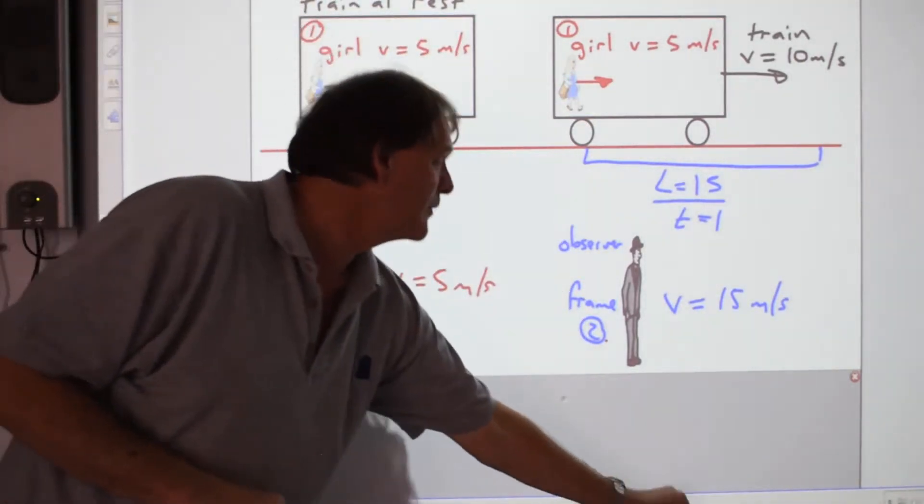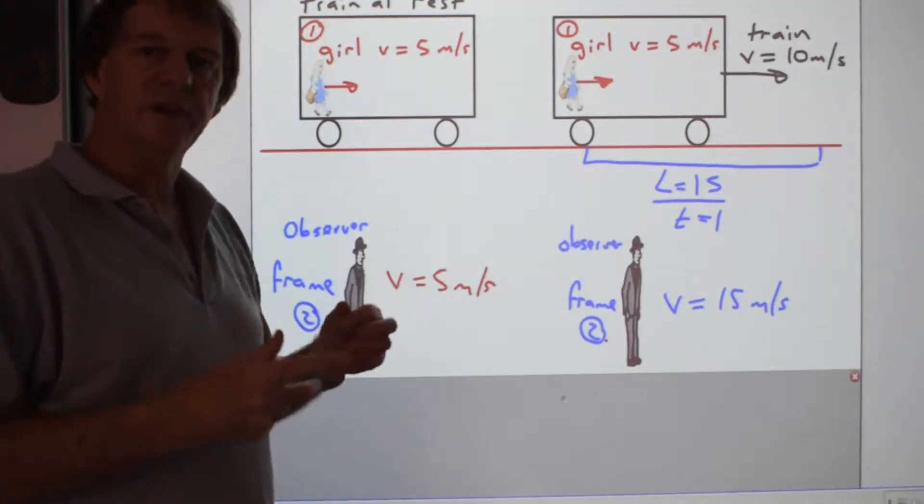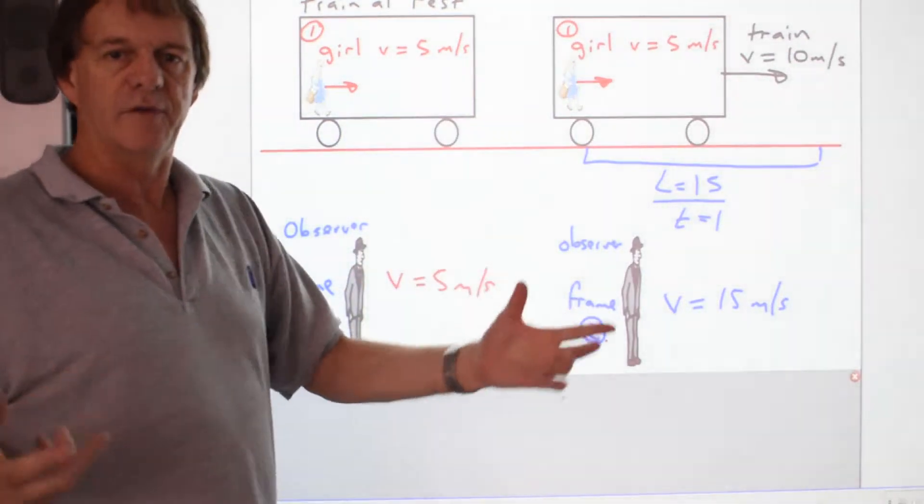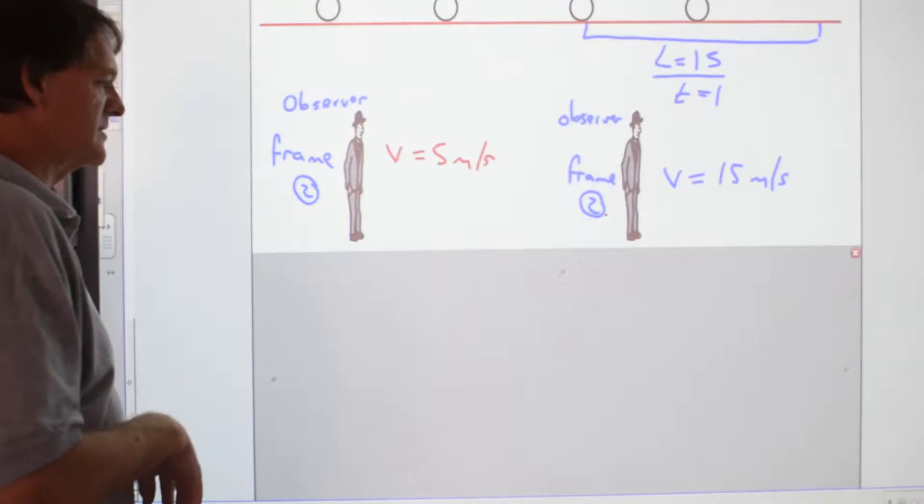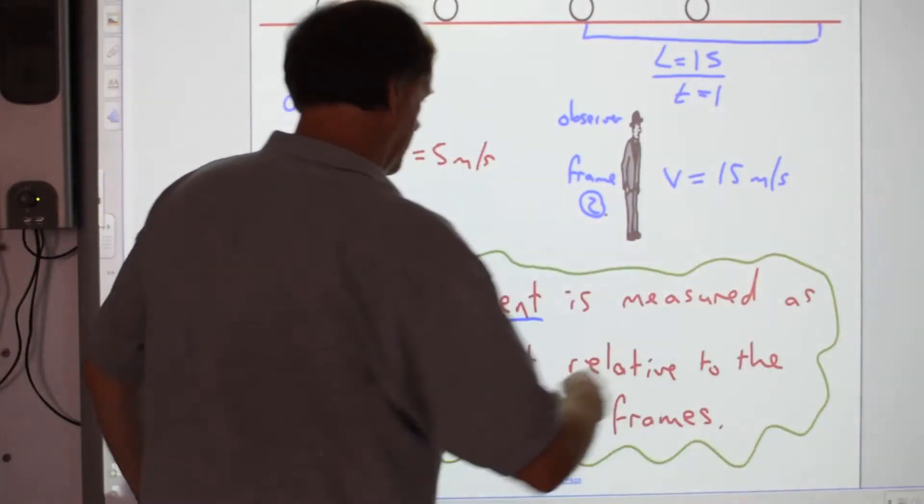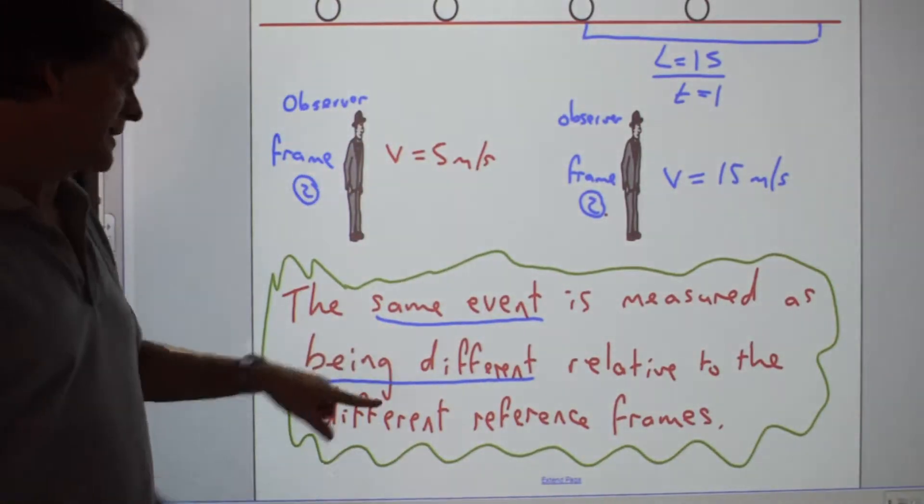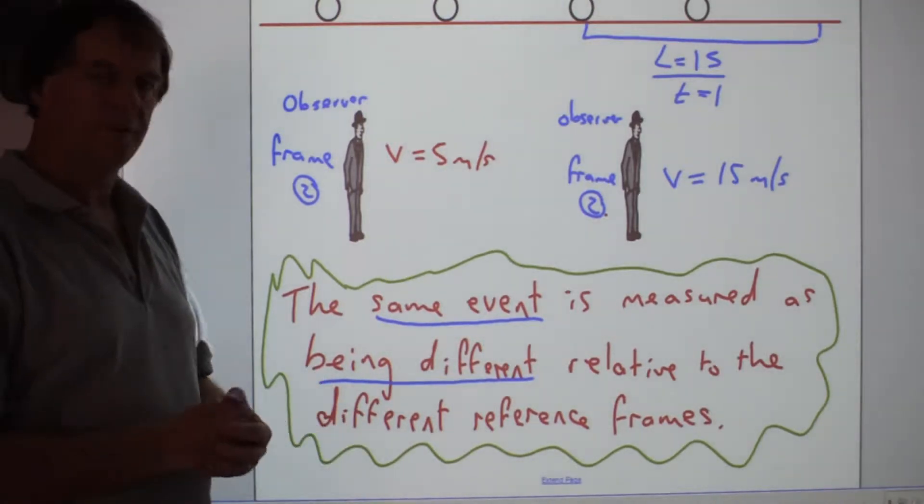This is the idea that the same event can be recorded differently by two different observers in different reference frames. This is the idea about relativity. The same event is measured as being different relative to the different reference frames.